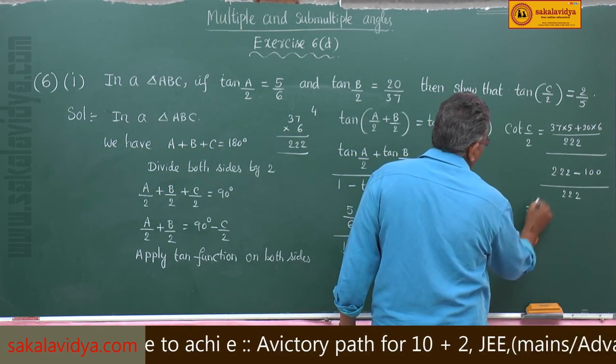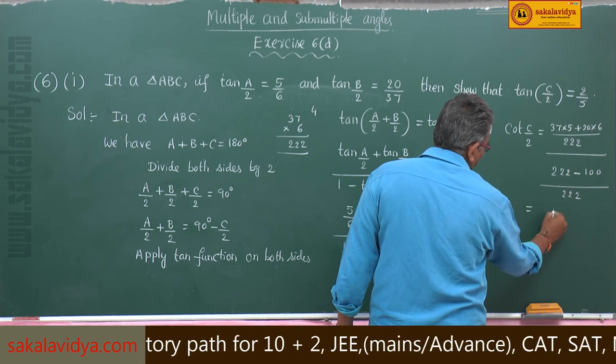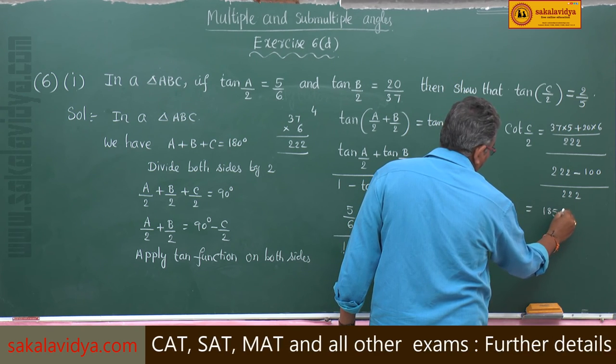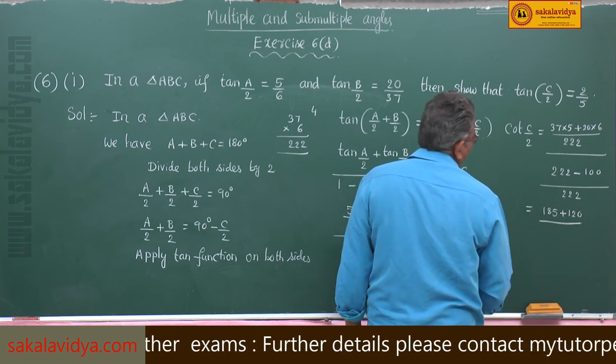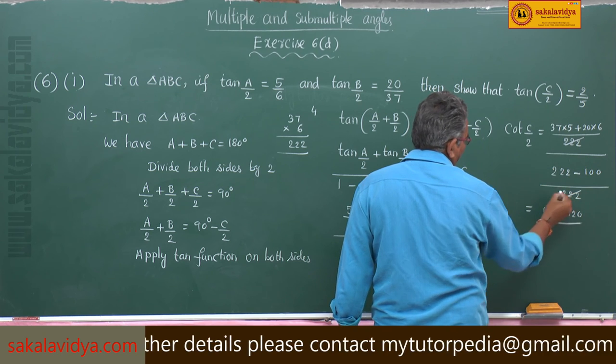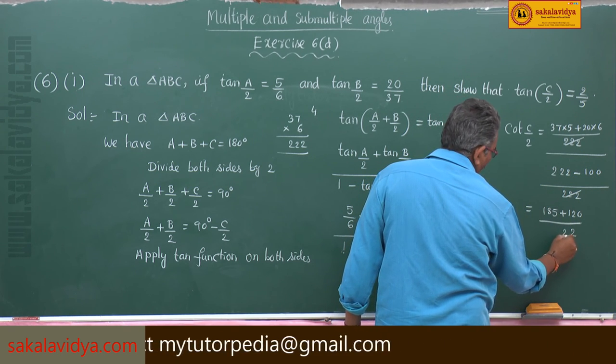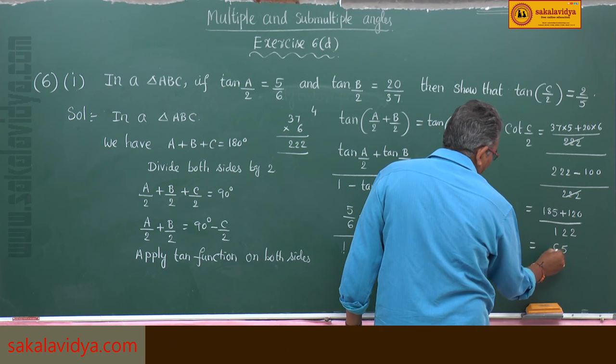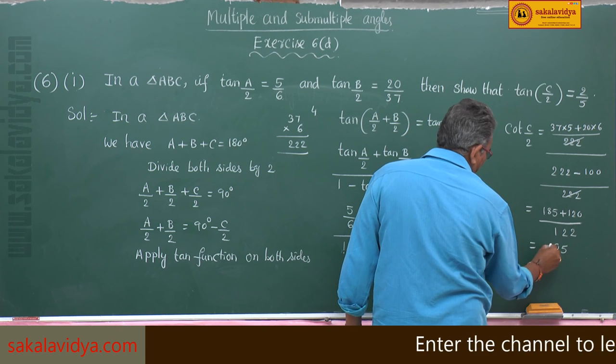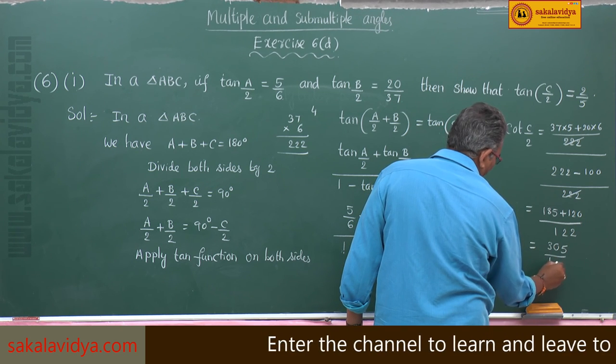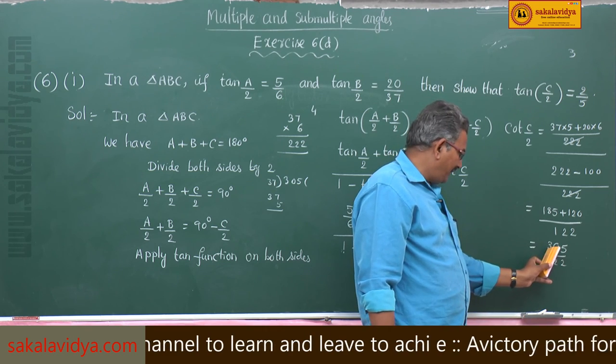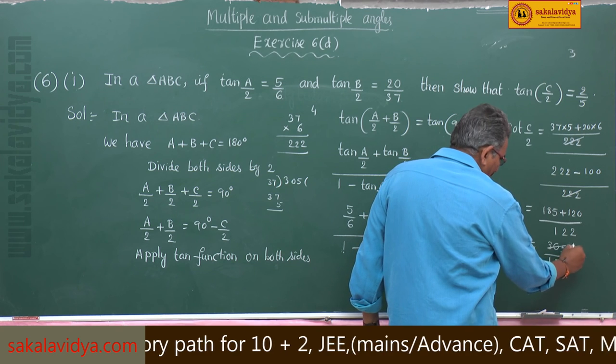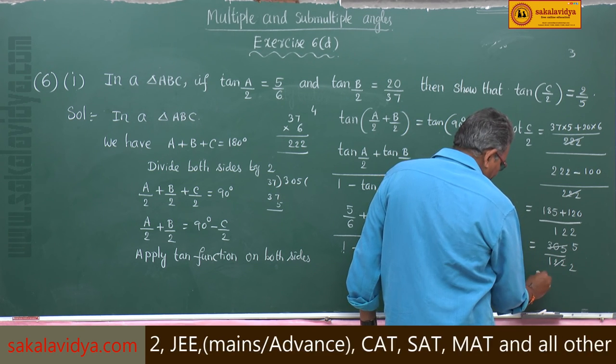37 into 5 is 185 plus 120 divided by 122, this gets cancelled. This will be 305 by 122. Let us simplify this 305 by 122. 61 is common, so this will be 5 by 2.